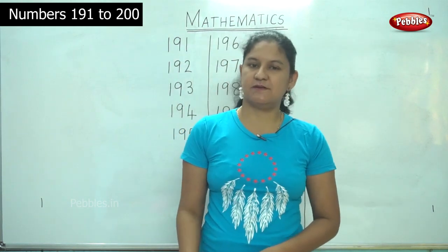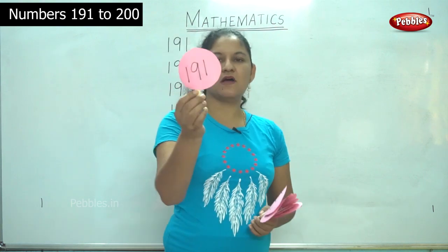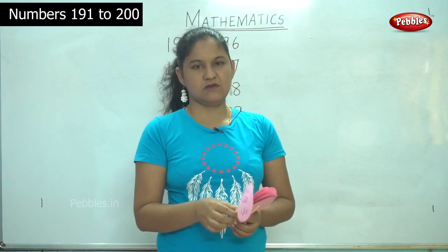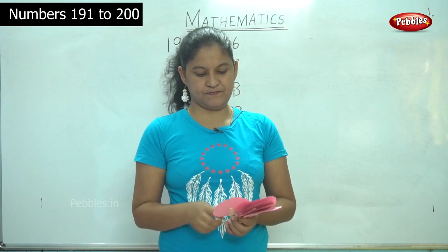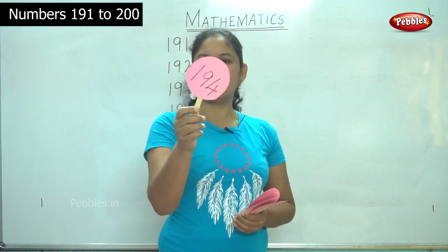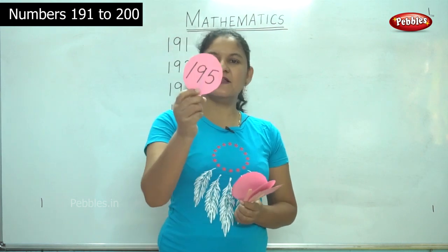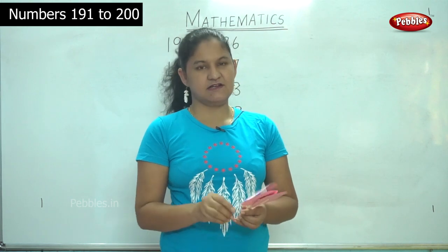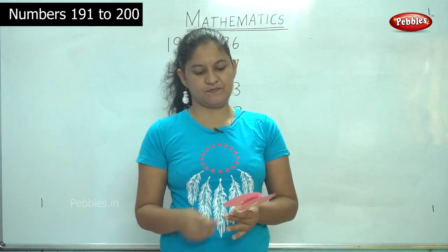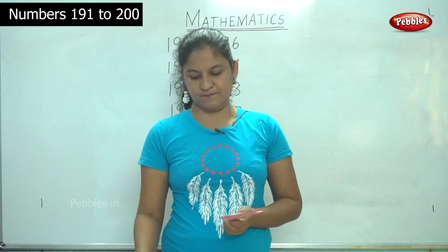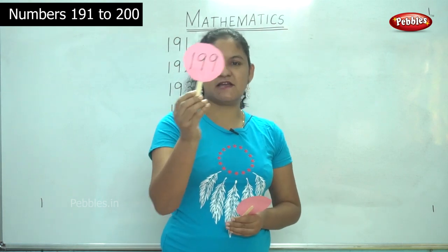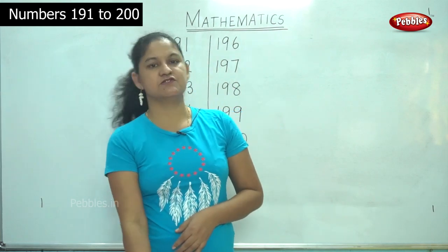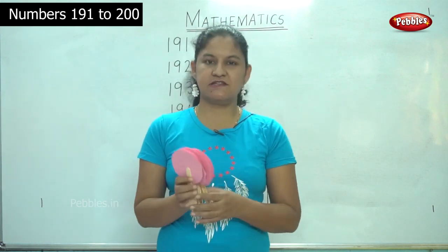So shall we repeat the numbers once more? So we have 191, 191, 192, 192, 193, 194, 195, 196, 197, 198, 199, 200. So now we have learnt to write the numbers and identify them using these placards.